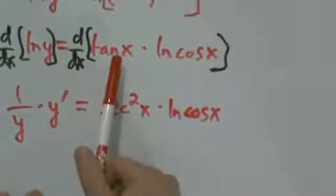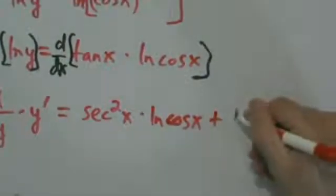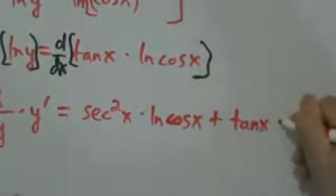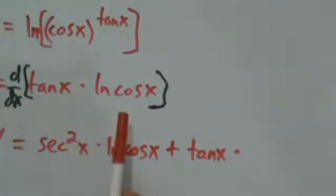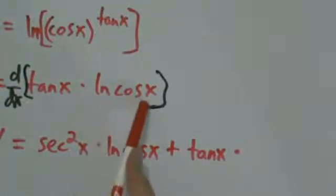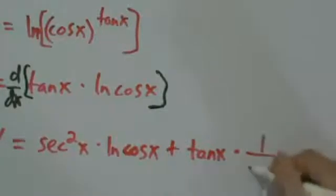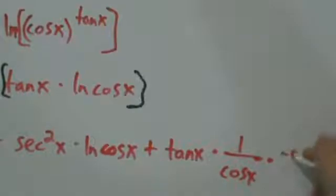The first is tangent of x. The derivative of tangent of x is secant squared of x. So this is derivative of the first times the second, plus the first times the derivative of the second. The second is natural log of cosine of x, and the chain rule says the derivative of that is 1 over cosine of x times negative sine of x.